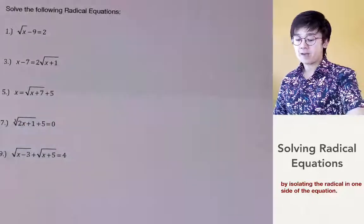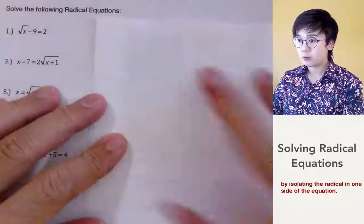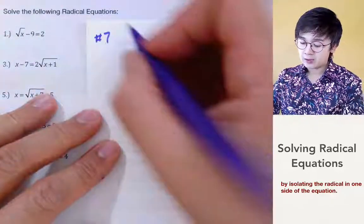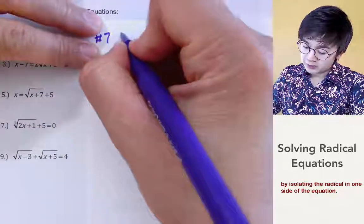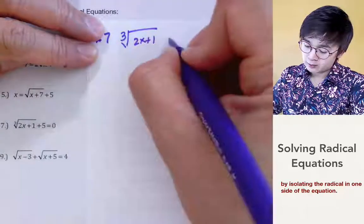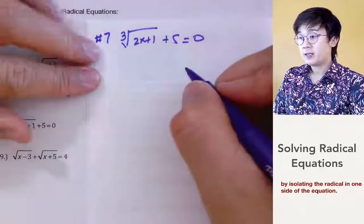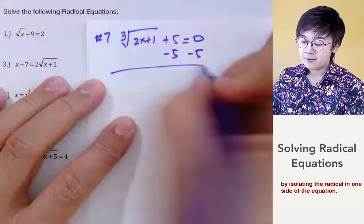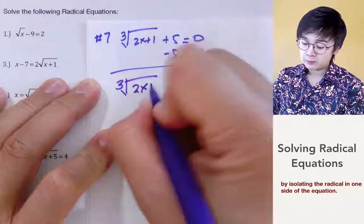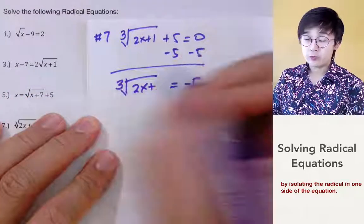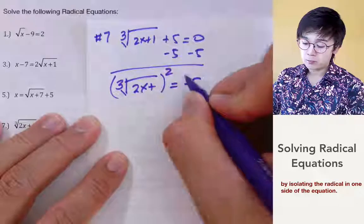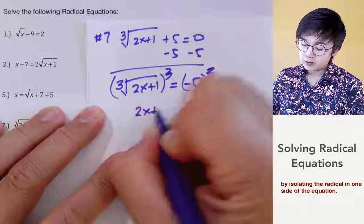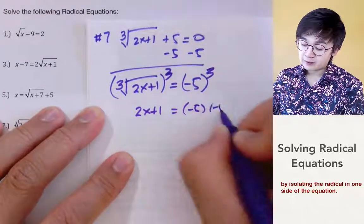Now let's go ahead and answer problem number 7. This problem involves a cube root rather than a square root. We have cube root of 2x plus 1 plus 5 equal to 0. Since the radical expression still has a constant, we subtract 5 from both sides, leaving cube root of 2x plus 1 equal to negative 5. To undo the cube root, we take the cube of both sides.